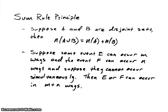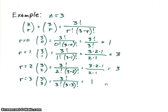Now in terms of experiments, suppose some event E can occur M ways, and another event F can occur N ways, and suppose they cannot occur simultaneously. Then the number of ways that E or F can occur is M plus N. So when we're doing an experiment, we look at the outcome. The outcome will be either one of the events in E or one of the events in F — it won't be both. Therefore, the total number of ways that we can have events occur would be M plus N.